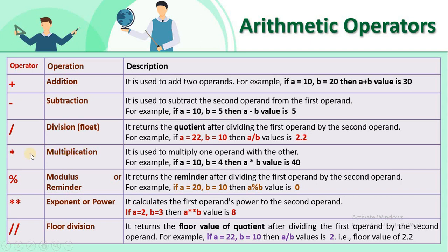For multiplication, we use the star symbol. If a = 10 and b = 4, then a * b gives 40. Next is the modulus operator, also called the remainder operator, for which we use the percentage symbol. As the name suggests, you will get the remainder as the answer. For example, if a = 20 and b = 10, then a % b gives 20 modulus 10, and since 10 goes into 20 twice with no remainder, the answer is 0.